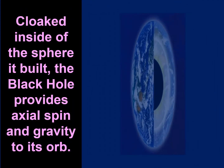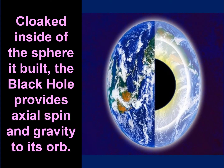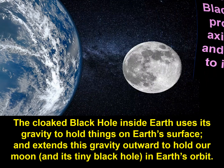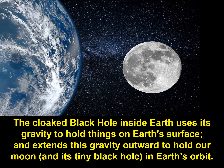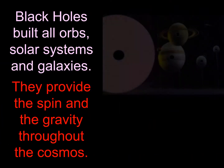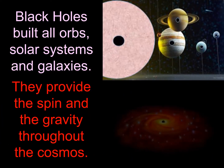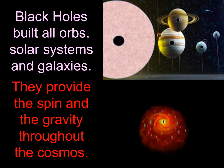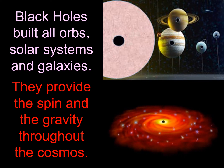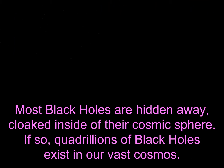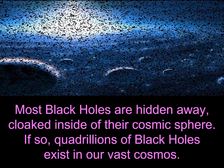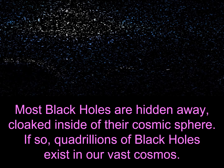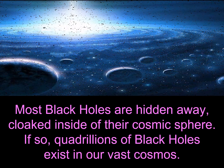There is a cloaked black hole inside every planet, moon, and sun. Cloaked inside of the sphere it built, the black hole provides axial spin and gravity. The cloaked black hole inside Earth uses its gravity to hold things on Earth's surface and extends its gravity to hold our moon and its tiny black hole in Earth's orbit. Black holes built all orbs, solar systems, and galaxies — they provide the spin and the gravity throughout the cosmos. Most black holes are hidden, cloaked inside of their cosmic sphere, meaning quadrillions of black holes exist in our vast cosmos.